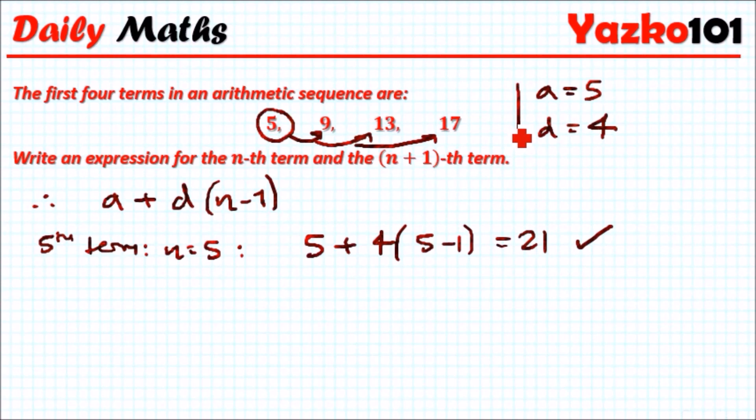So therefore to summarize, the nth term, look at right here, it's going to be literally 5 plus 4 times (n-1). And that's it. And I guess we could simplify this. We can expand it.